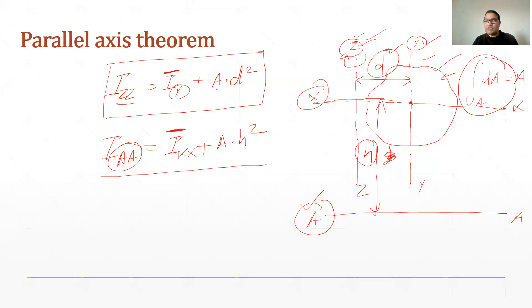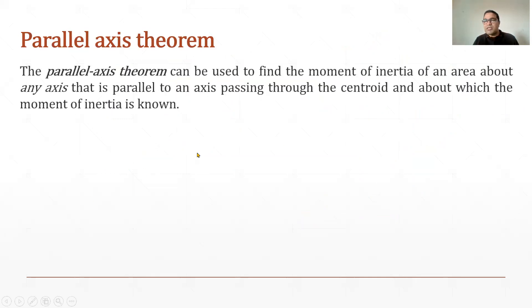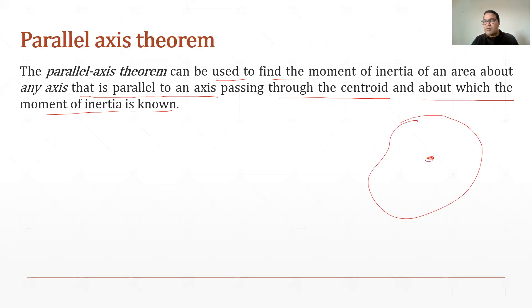This is the formulation for the parallel axis theorem. The parallel axis theorem can be used to find the moment of inertia of an area about any axis that is parallel to an axis passing through the centroid, provided the moment of inertia about the centroidal axis is known beforehand. So before solving for any unknown axis, we must know the moment of inertia about the centroidal axis.